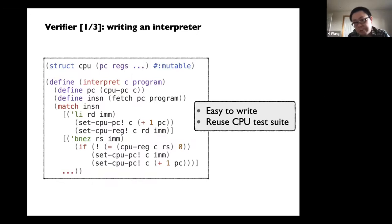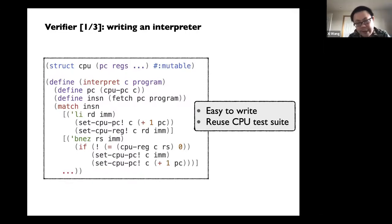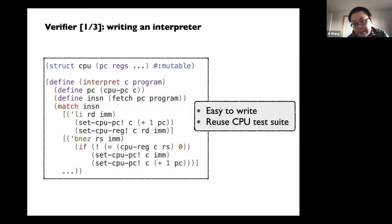Let's look at the interpreter details. This is a simplified RISC-V interpreter — basically what you'd do in any language. First, you define your CPU state: the program counter PC, a bunch of general purpose registers, memory, etc. Then you have a core function called interpret, which does basic instruction fetching and dispatching based on the opcode. For example, for an LI load-immediate instruction, you bump the PC by one and set the destination register to that immediate. This is just regular programming. And the entire thing is also executable — since this is part of your TCB, you have to trust the semantics, so we run it against existing RISC-V CPU test suites to build confidence in correctness.